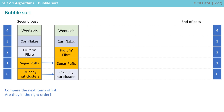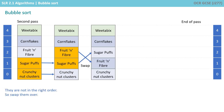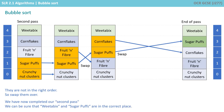We compare the next two items on our list. Are they in the right order? Well, they're not, so we swap them over. We compare the next two items in our list. Are they in the right order? They're not, so we swap them over.